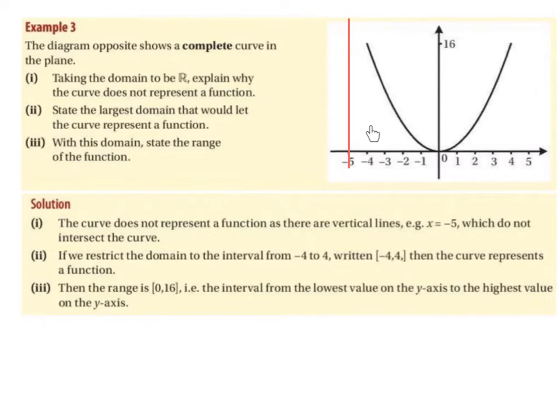So if we were to use x values from minus 4 up as far as 4, then any vertical lines that we could draw from minus 4 up as far as 4 would intersect our curve.